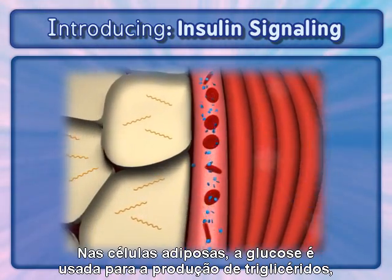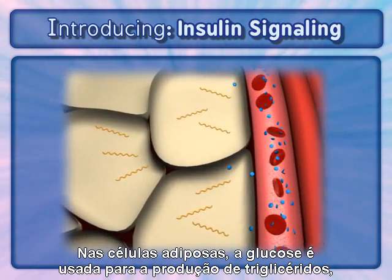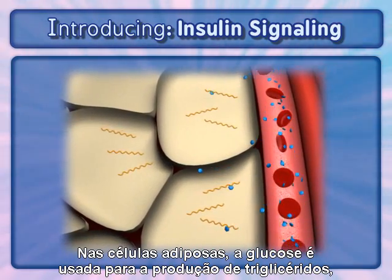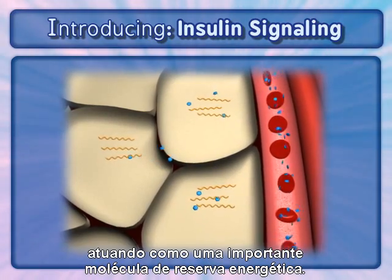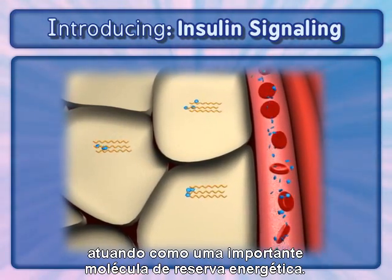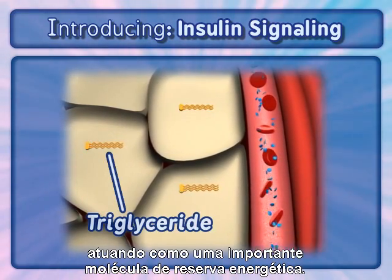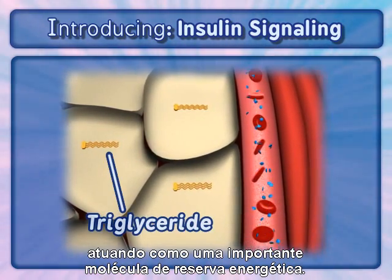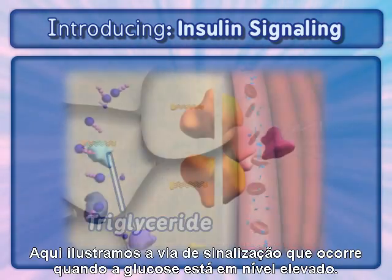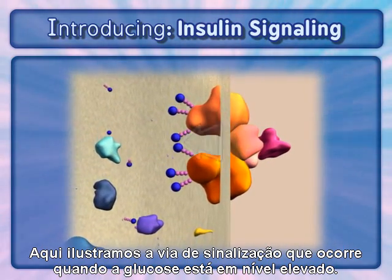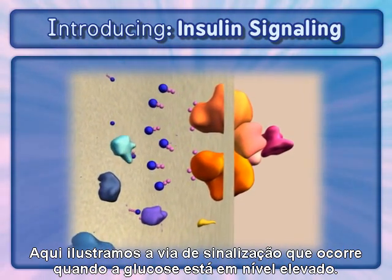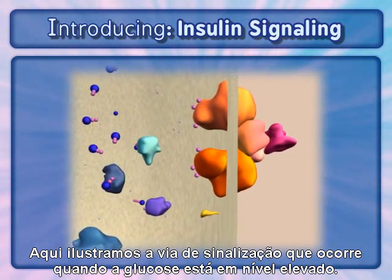In fat cells, glucose is used for triglyceride production and acts as an important energy reserve molecule. Here, we will illustrate the signaling pathway that occurs when glucose is at high levels.